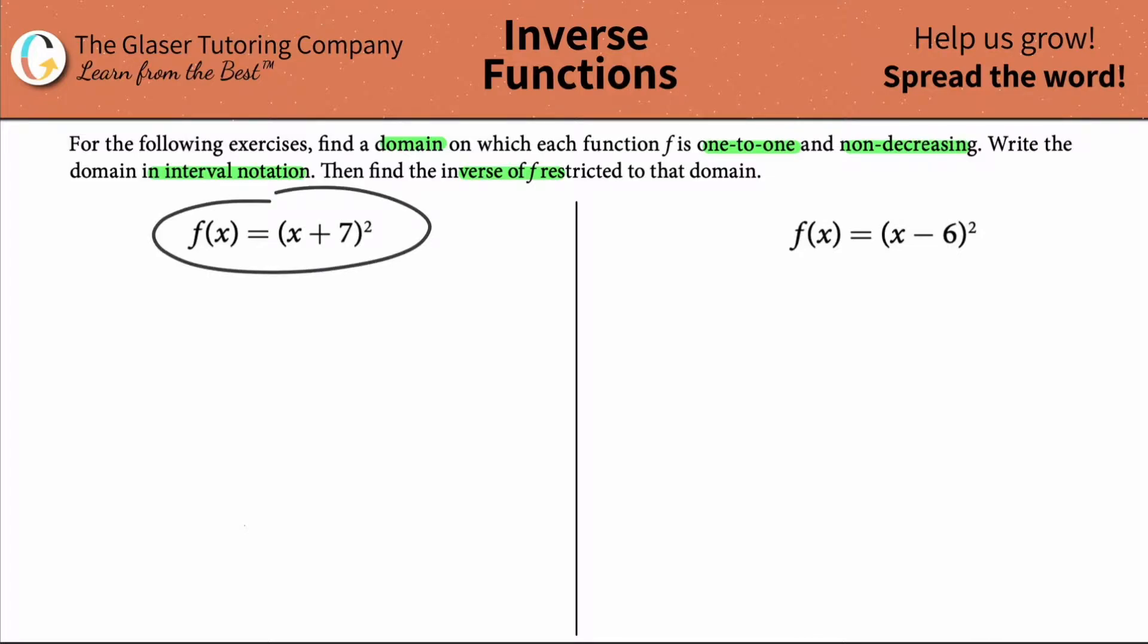We're given this first function f(x) equals (x + 7)². What we want to do first is probably just graph this thing. You can just take out your graphing calculator, plug that into the graphing utility, and we'll realize that the graph will look something like this. Here is about negative 7.